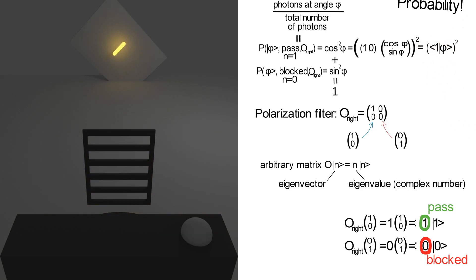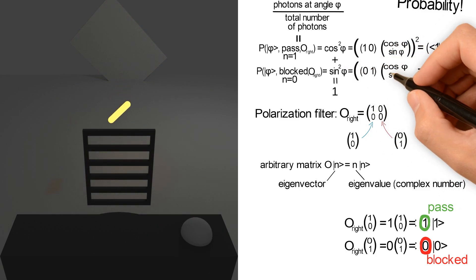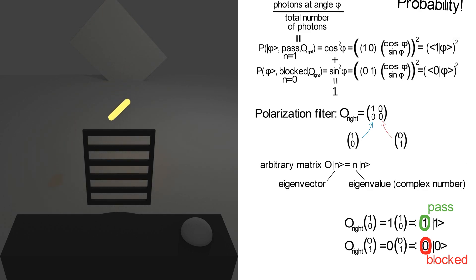The same is true for the probability of our photon in state phi to be blocked by the right-oriented filter. Being blocked means eigenvalue n equals 0, and the corresponding inner product of state 0 with phi squared is 0 1 times cosine phi sine phi squared.